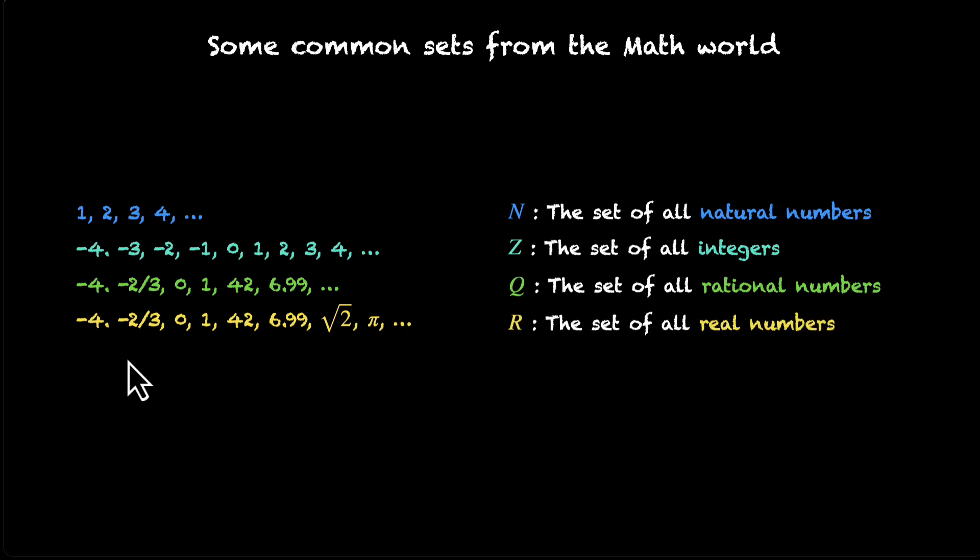And we can even slice them up. Let's say we only look at the positive numbers. Let's say we only look at the positive rational numbers. This set is called R+. This is the set of all positive real numbers. There are cases where we only need the positive results and for those cases, we use these sets. Another example is when we only take the positive integers. That's called the set of all positive integers and it's denoted by Z+. Alright, so these are some common sets from the math world.